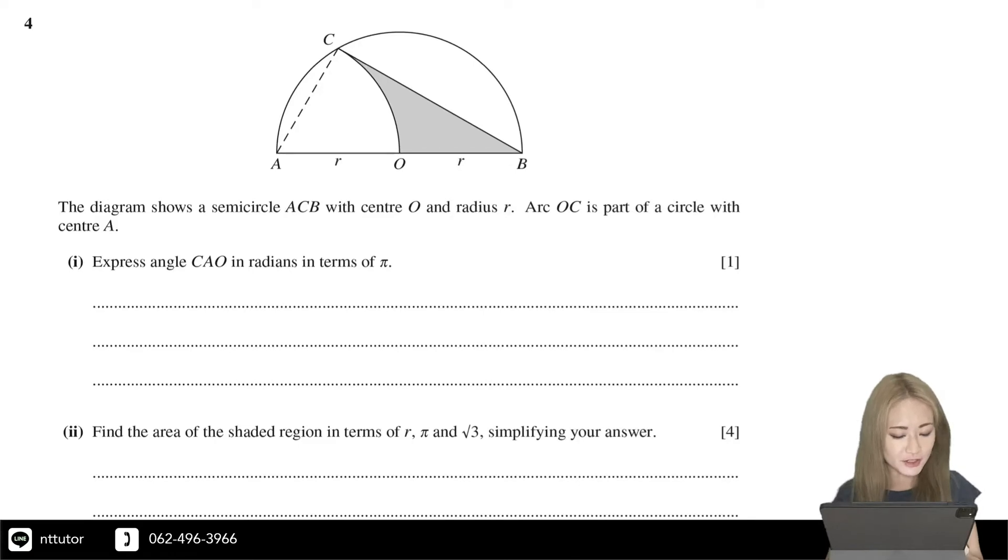The diagram shows a semicircle ACB with center O and radius R. Arc OC is part of a circle with center A.